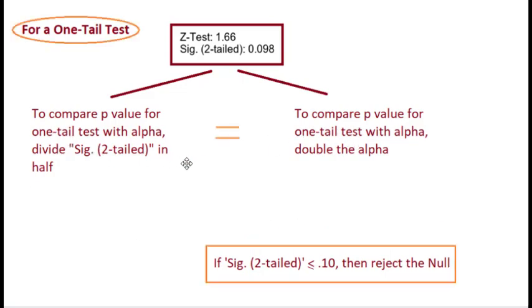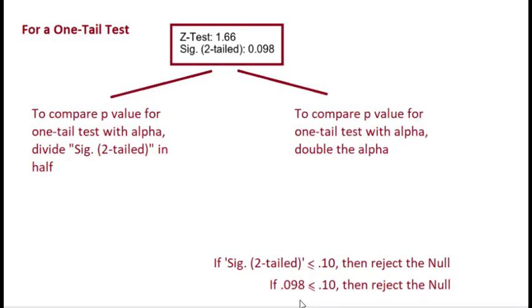Both of these methods are equivalent to one another when you're working with significance two-tailed, but you want to do a one-tailed test. Given that 0.098 is less than or equal to 0.10, we would reject the null hypothesis.